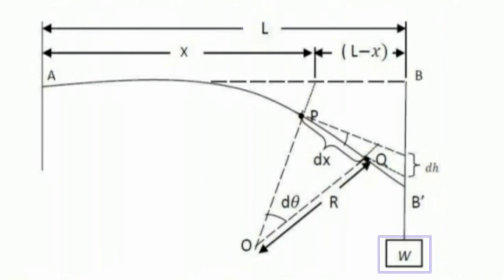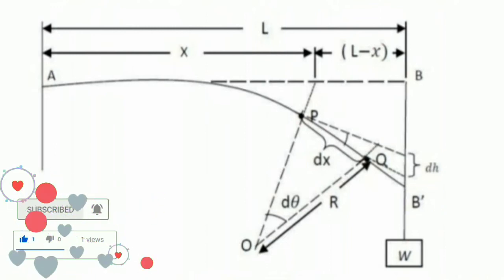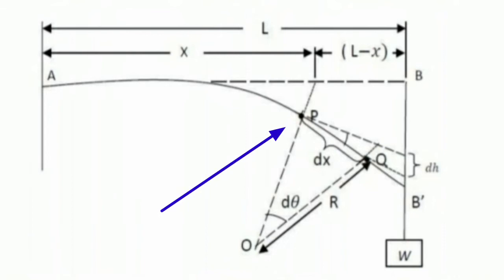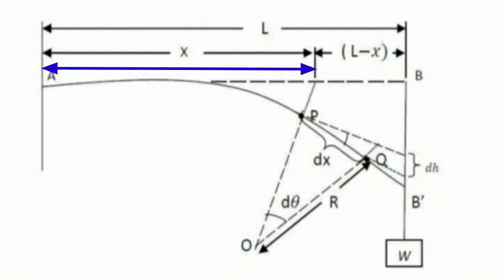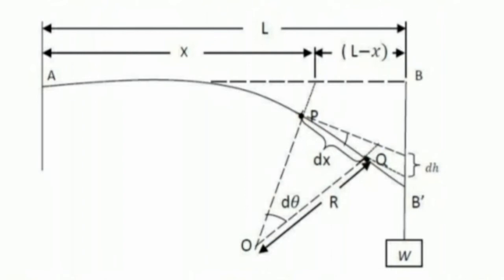Let L be the length of the fixed beam and W be the load attached at the free end. Let the neutral axis AB get deflected to AB-dash, where B-dash is the depression. Consider a section P at distance x from the fixed end, so that PB is approximately equal to PB-dash, which is L minus x, where L is the original length and x is the distance from the fixed end to P.